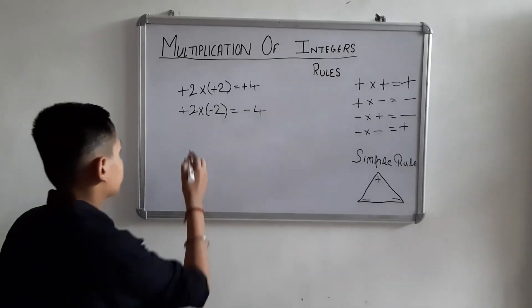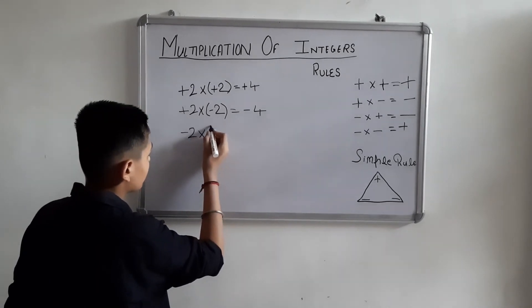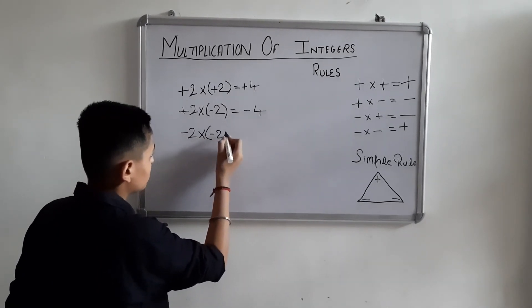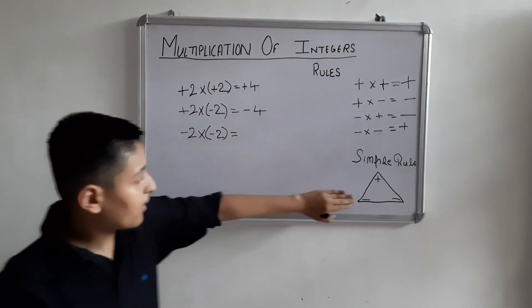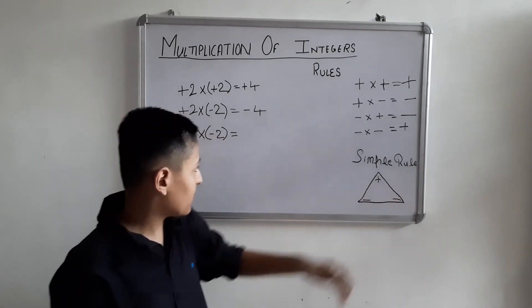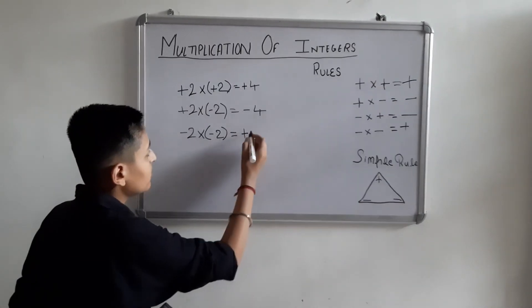Minus two into minus two. Minus into minus. Hide both minus signs, what is the answer? Plus. Our answer will be plus. Two into two is four, so plus four.